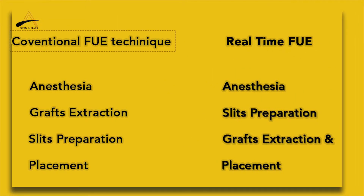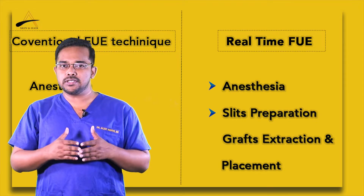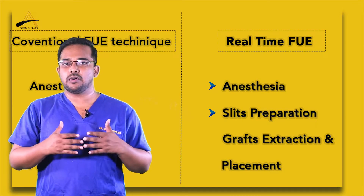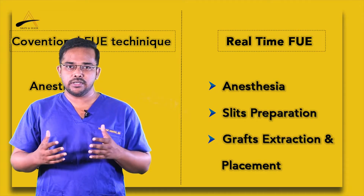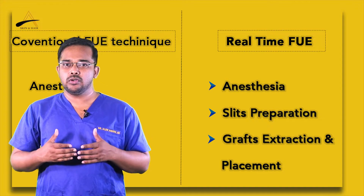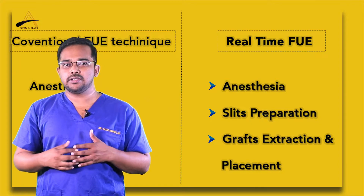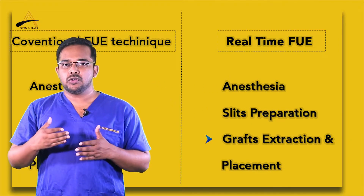In conventional FUE, grafts are first extracted, then slits are prepared, then placed using either forceps or an implanter. In real-time FUE, the difference is that after anesthesia and slit making, the third and fourth steps — extraction and placement — are performed simultaneously. Once the pre-made slits have been created, grafts are extracted and immediately placed into the pre-made sites using an implanter.